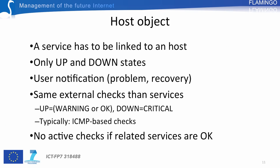There are various objects you can configure within Nagios. In addition to services, you can configure host objects. A service has to be linked to a host in Nagios. There are only two main states for a host: up and down. The checks are very similar to those used for services, except that warning or OK states are equivalent to a single up state, and the critical state is equivalent to a down state.